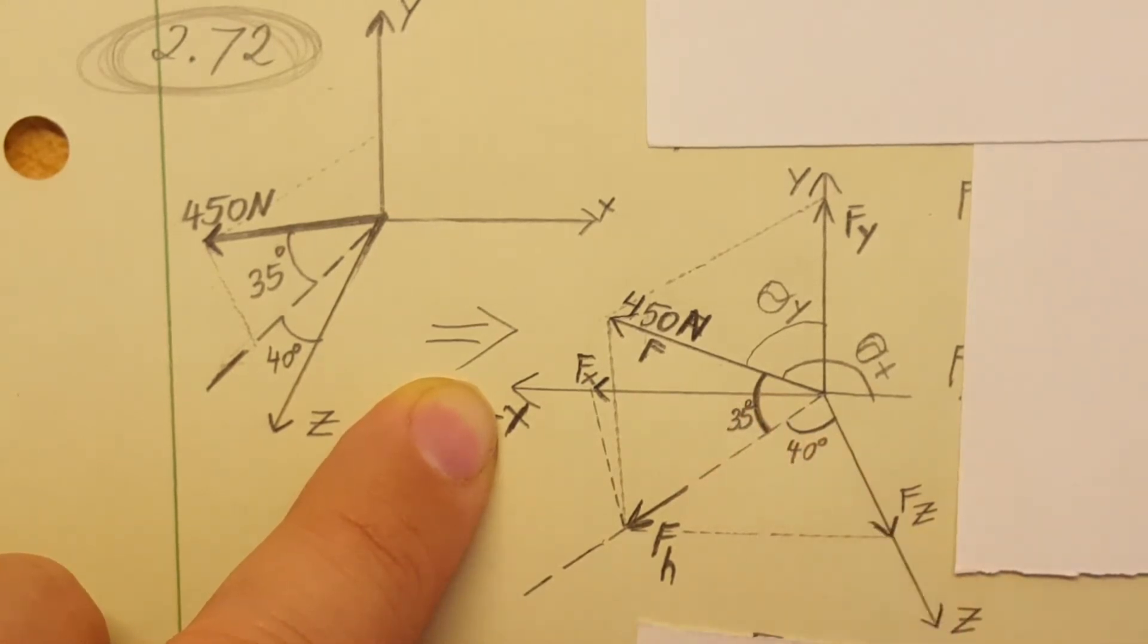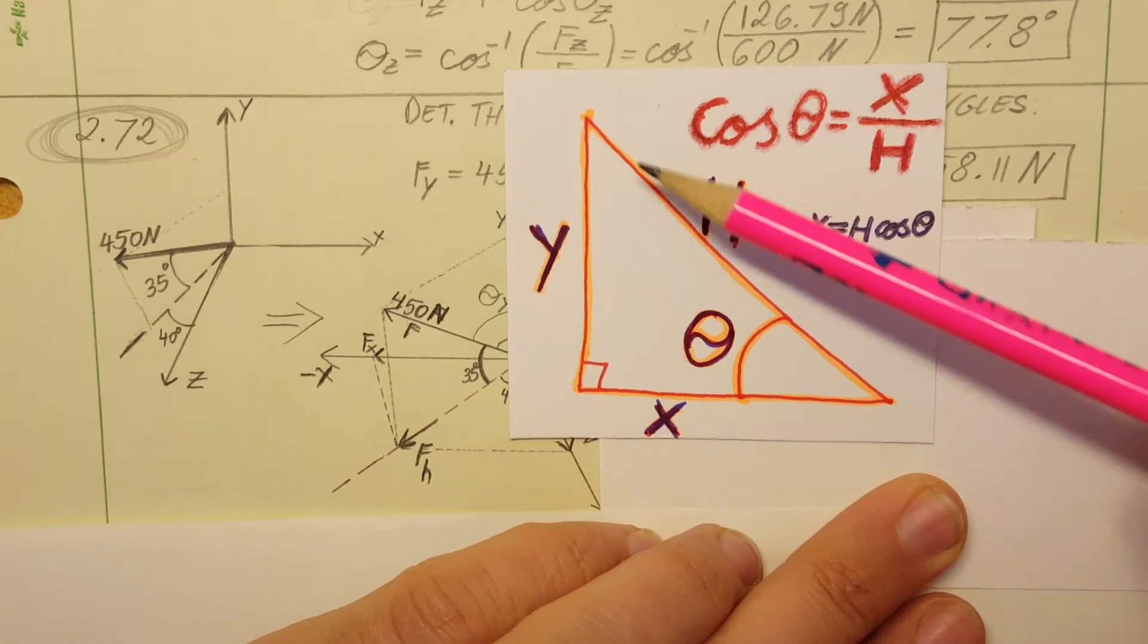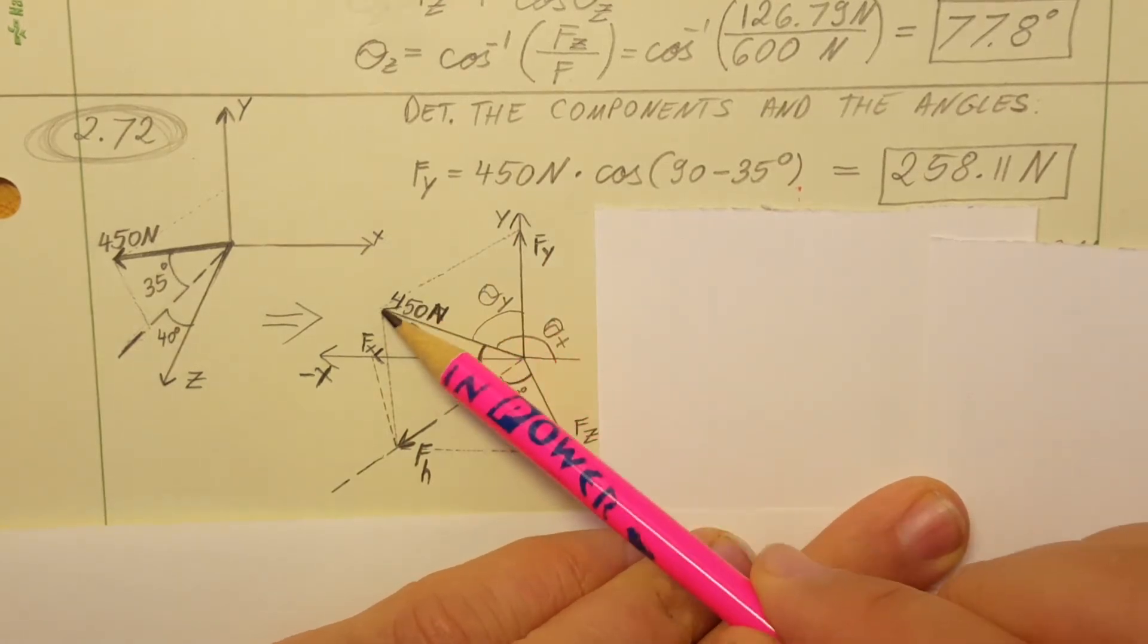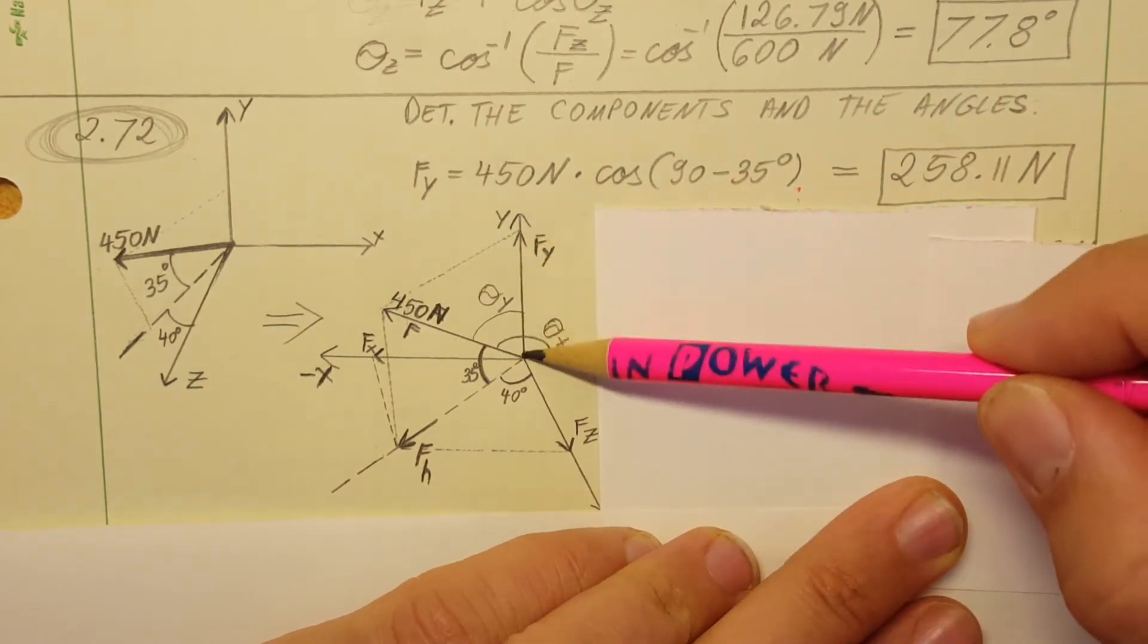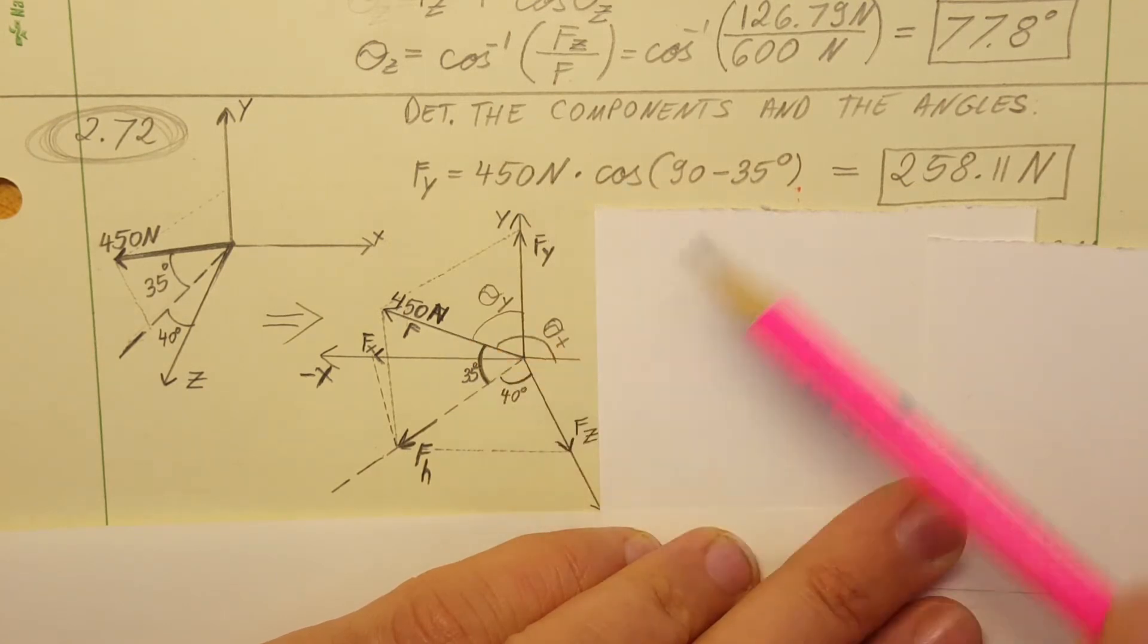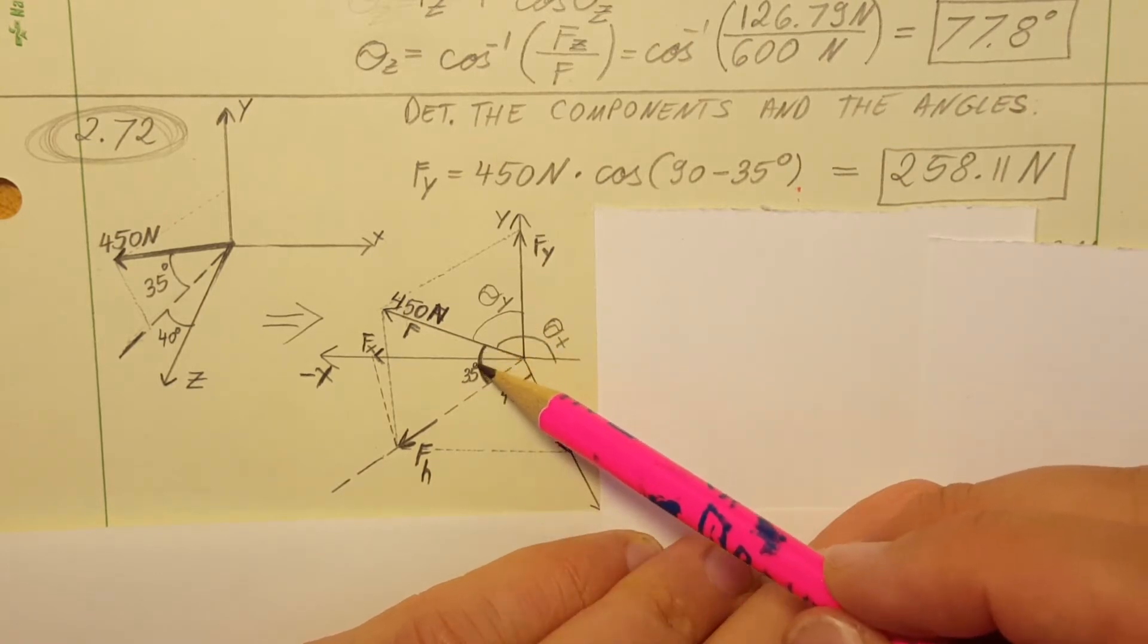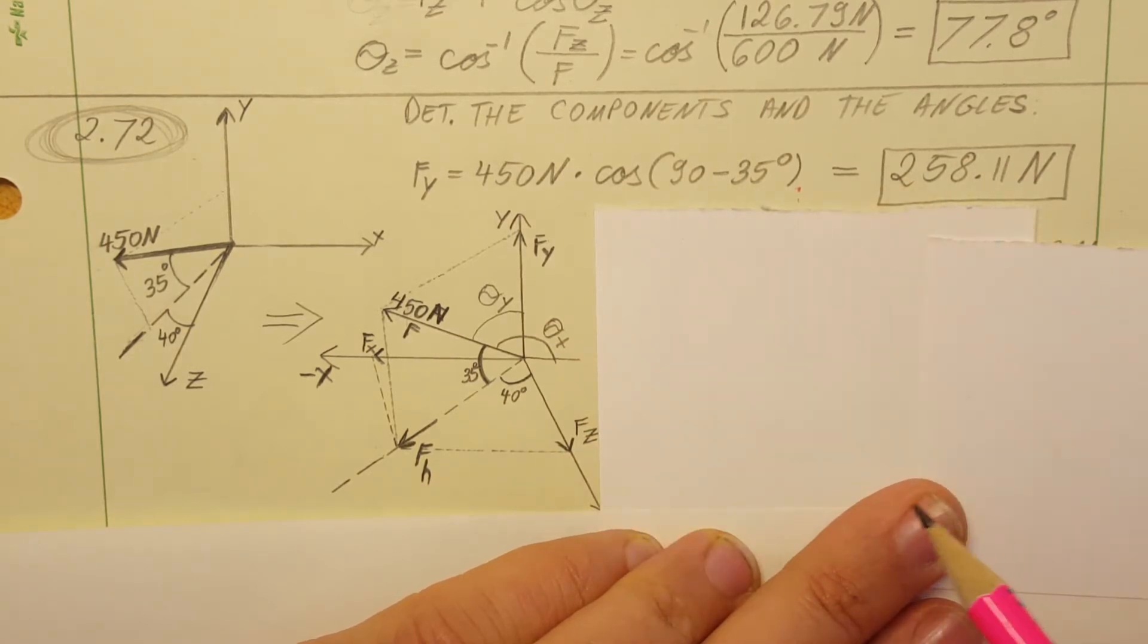Okay I'm gonna start calculating the components, I'm gonna rely on this setup and I'm gonna use cosine. The first component I'm gonna find FY. There you go this is our FY component right here and we're gonna use F times cosine of the theta which is 450 Newton times cosine of, let's see we have a horizontal line here and this is a vertical so that would be 90 degrees but this bottom one is given to us so this over here is 90 minus 35. With a calculator we're gonna get 258.11 Newtons.